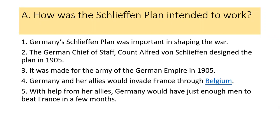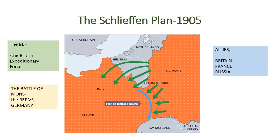The plan was to invade France through Belgium. With the help from her allies, Germany would have just enough men to beat France in a few months.